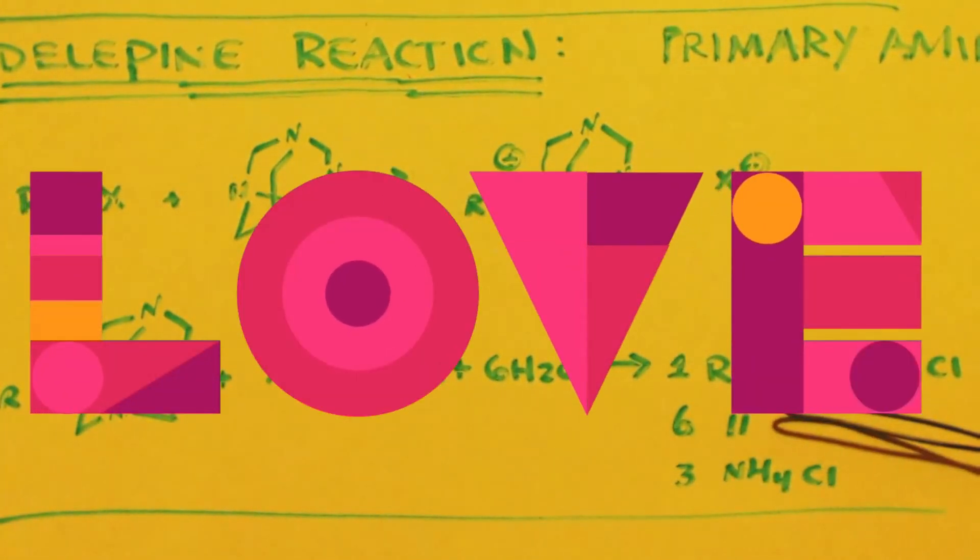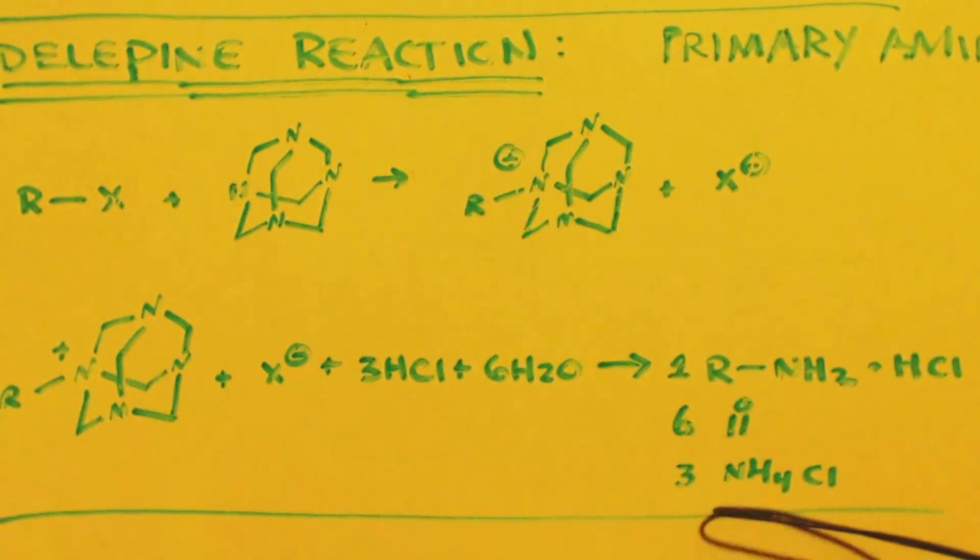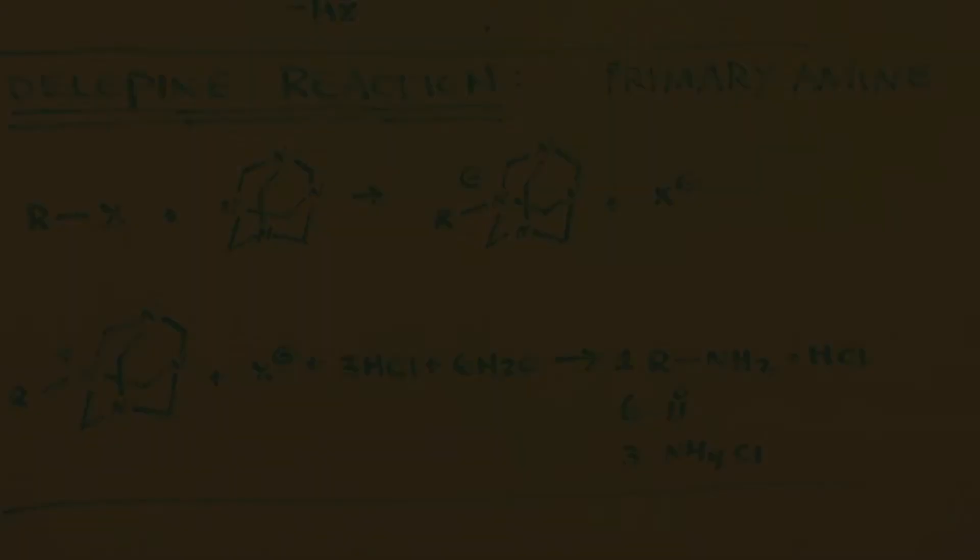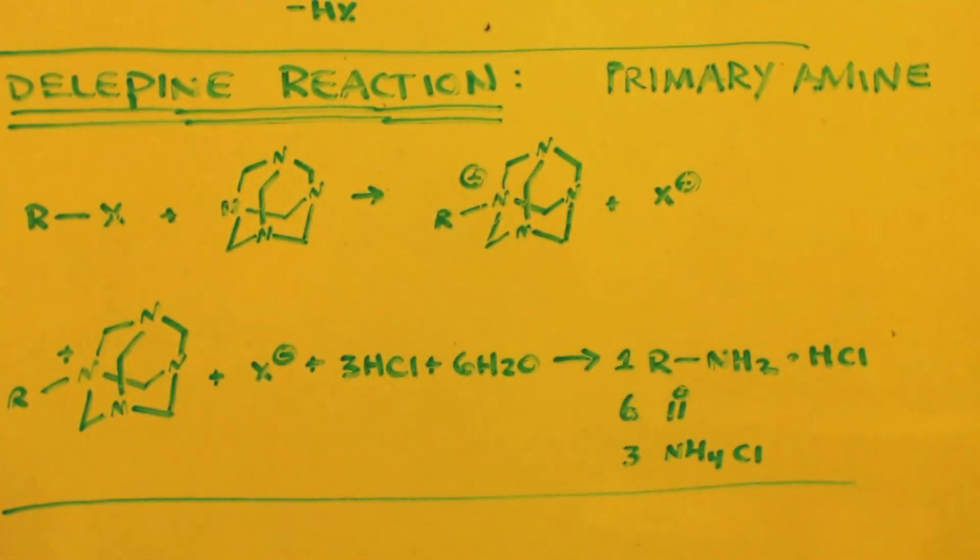Next reaction is the Delepine reaction - it's used to make primary amines. You can take an alkyl or benzyl halide, react it with the hexamine and make this salt. So you add, if it adds three moles of HCl and six waters, you'll end up making your primary amine hydrochloride salt plus six formaldehydes and three ammonium chlorides.